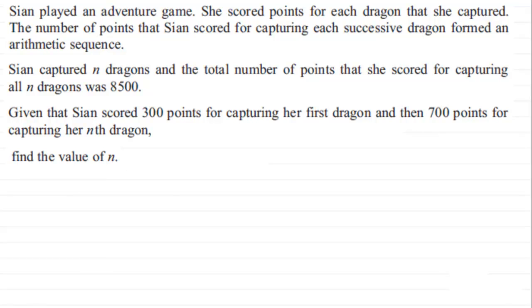So to do this, what I'd want to do first of all is just write out that she scored 300 points for her first dragon, and then to this she would have scored some more points for her second dragon and more points for her third dragon and so on. But what we're told is that if we sum all these terms up, when we get to her nth dragon she scored 700 points. So let's just say that this is the nth term then. That's the nth term and this clearly is the first term. We know what this total is going to come to—we're told that it comes to 8,500 points.